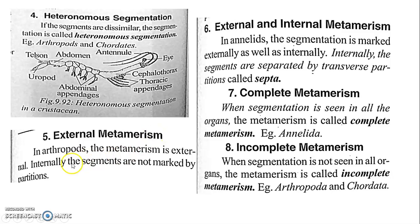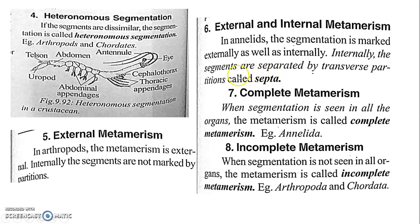External metamerism: in arthropods, the metamerism is external — internally, the segments are not marked by partitions. External and internal metamerism: this is found in the earthworm (annelids), where segmentation is marked both externally and internally. Internally, the segments are separated by transverse partitions called septa.